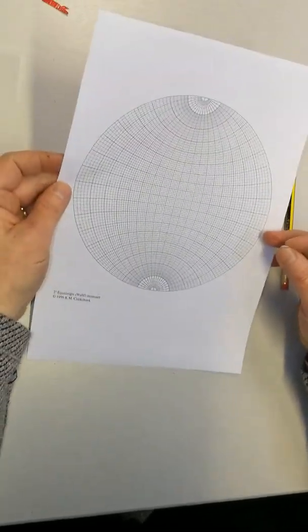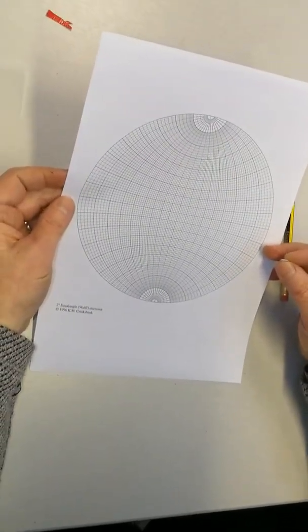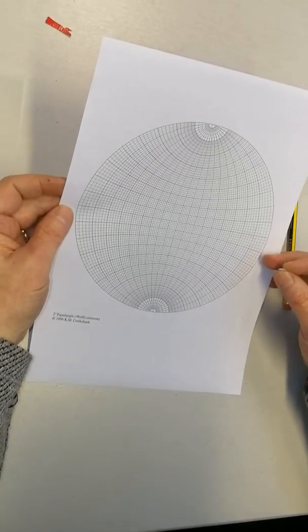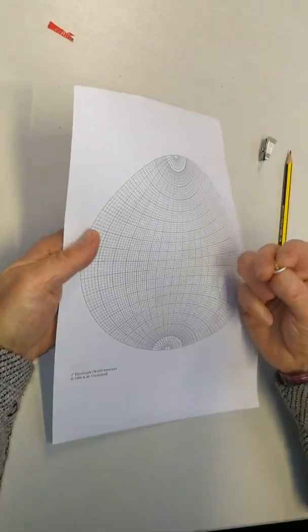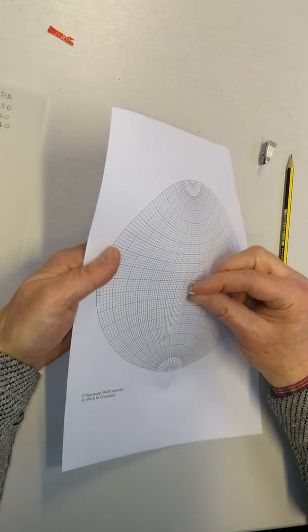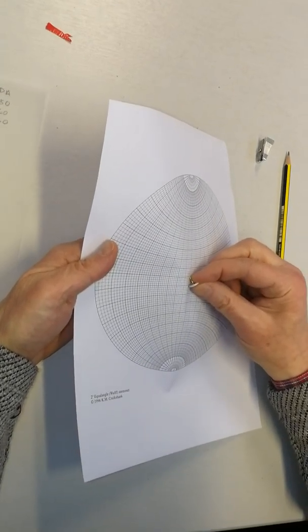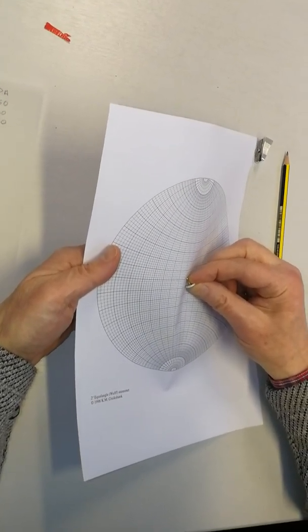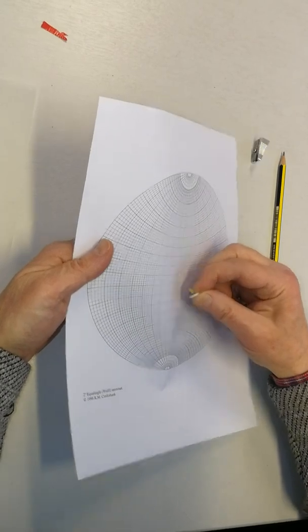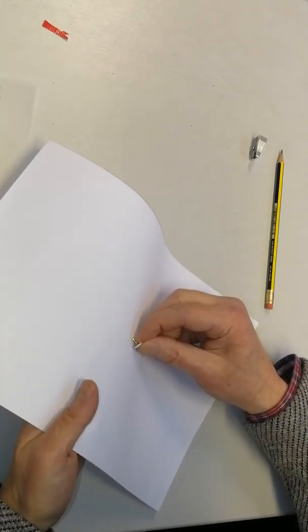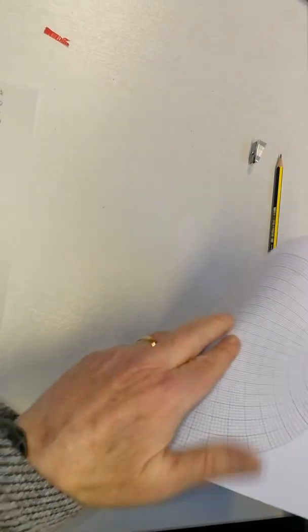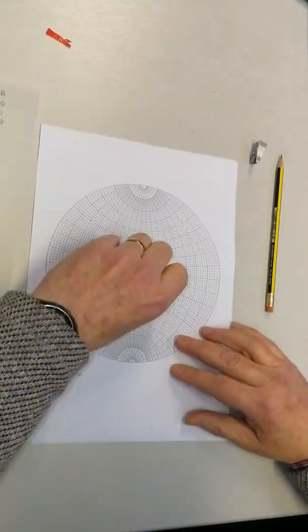So you need to start with a stereo net. This is a hemispherical stereo net and you find the center of it. You need a push pin. Find the center of the stereo net from the front, push the push pin through it, and then come to the back and push it fully through so that you have it like that.